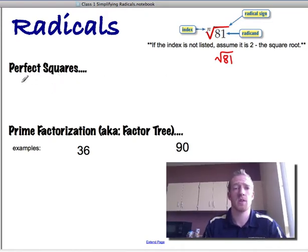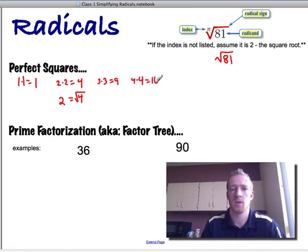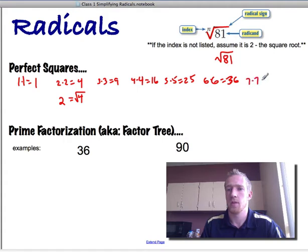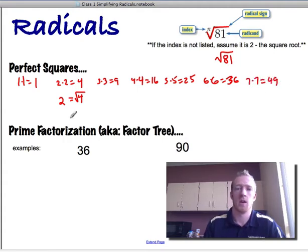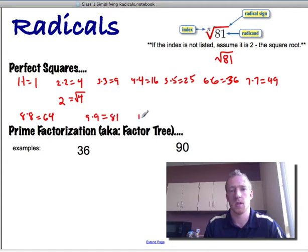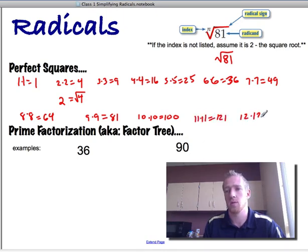So you're going to want to memorize these numbers, perfect squares. 1 times 1 is 1, 2 times 2 is 4, so that means the square root of 4 equals 2. 3 times 3 is 9, 4 times 4 is 16, 5 times 5 is 25, 6 times 6 is 36, 7 times 7 is 49, 8 times 8 is 64, 9 times 9 is 81, 10 times 10 is 100, 11 times 11 is 121, 12 times 12 is 144.